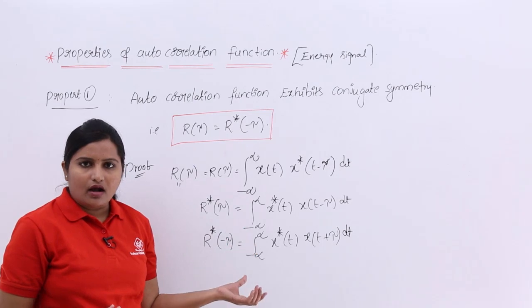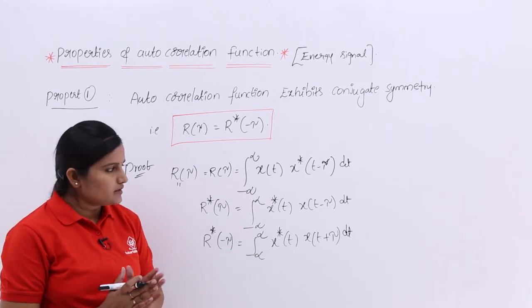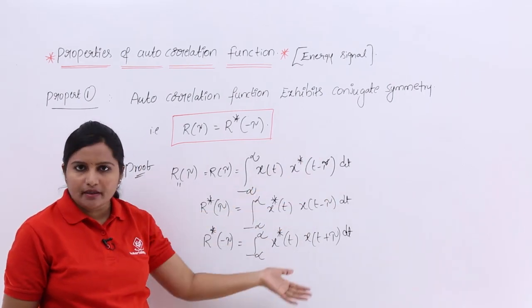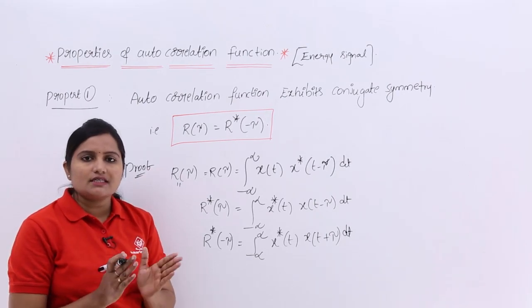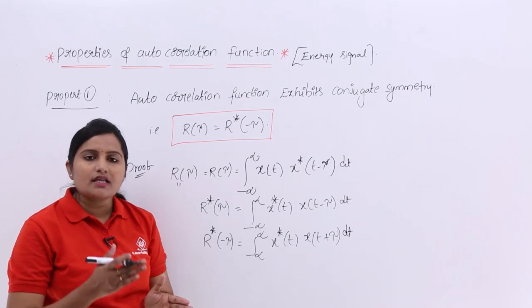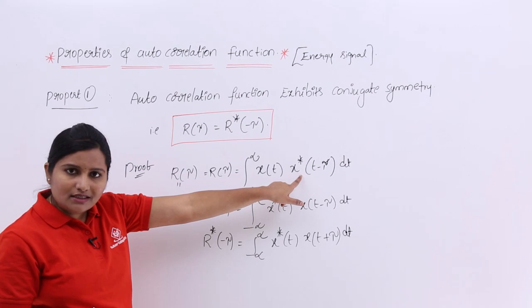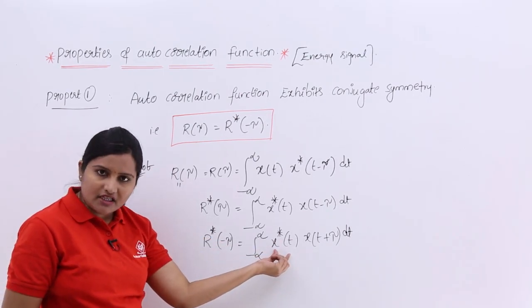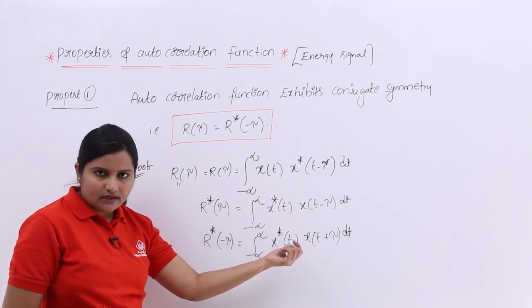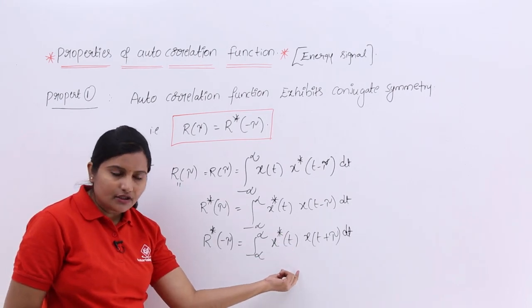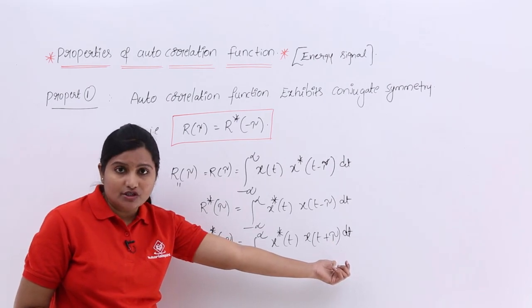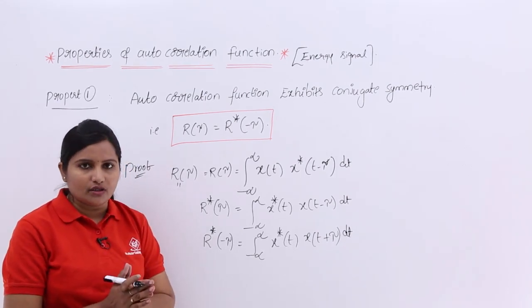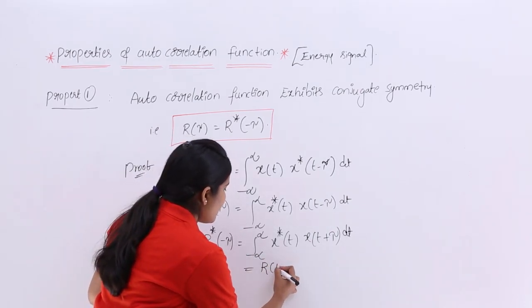As discussed when autocorrelation function was introduced, you can apply the shift here or there, using a positive or negative shift — it is still treated as the autocorrelation function. Autocorrelation function is the measure of similarity between a signal and a time-delayed shifted version of the same signal. So this expression — x*(t) · x(t + τ) — is also the autocorrelation function of the same signal, r(τ).